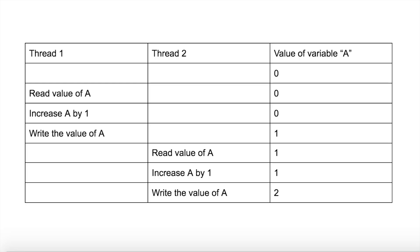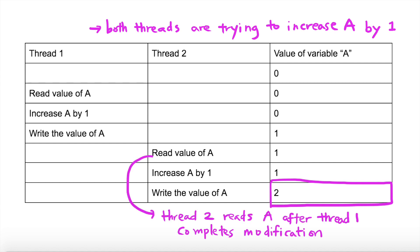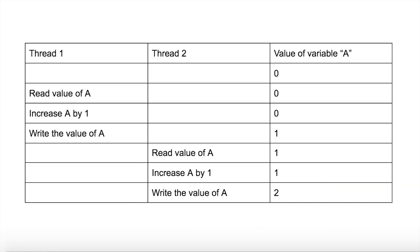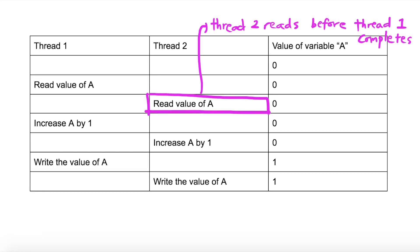For example, let's say that two concurrent threads of execution are trying to increase the value of a global variable by 1. So in the end, the global variable will have the value of 2. Ideally, the threads will be executed as such. But what if the execution of the threads are scheduled like this? In this case, the final value of the global variable becomes 1, which is incorrect. This is a race condition bug.